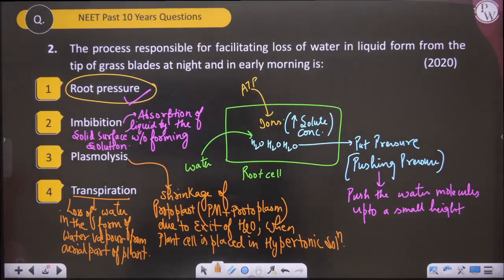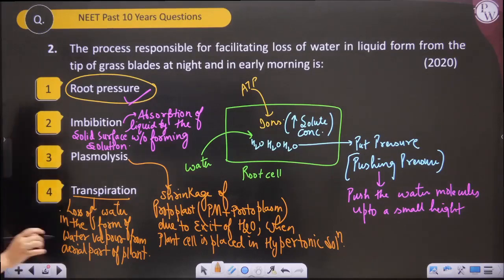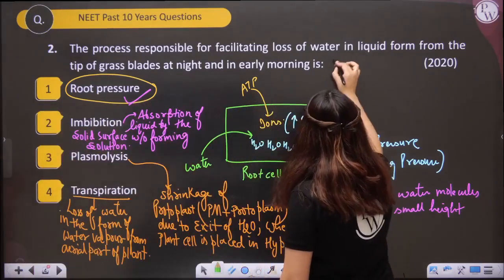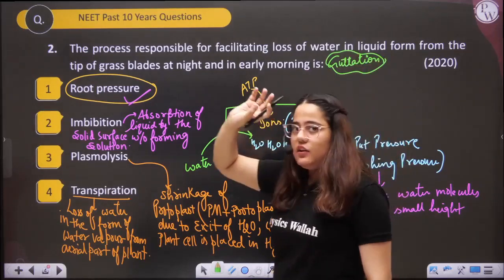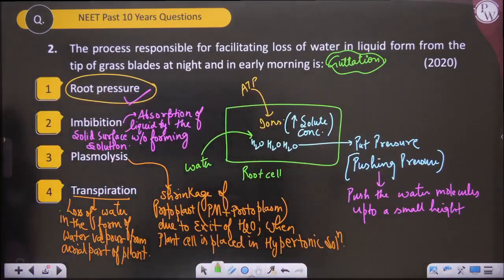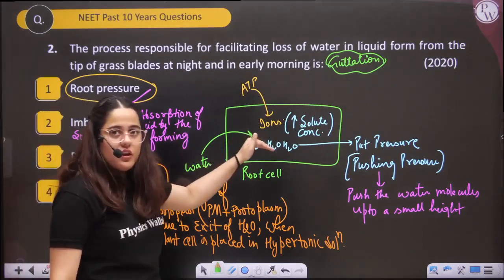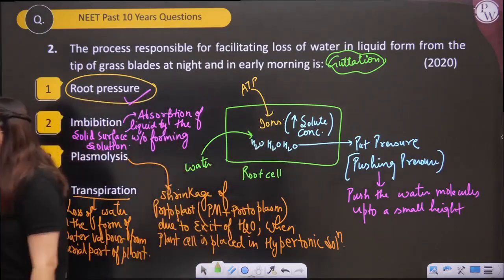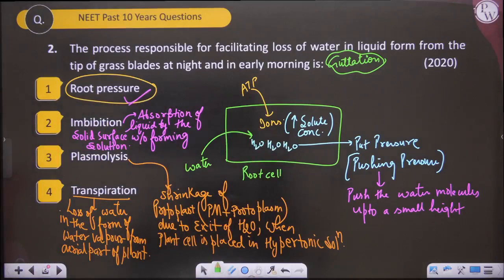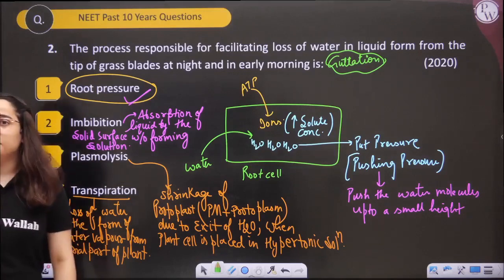But here the answer is root pressure, because of root pressure we can observe guttation. Guttation is loss of water in liquid form, while transpiration is loss in the form of water vapour. Guttation occurs because of high root pressure due to entry of water molecules pushing each other up to a certain height. The answer is root pressure.